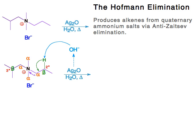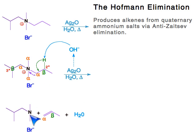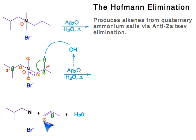The electrons form a lone pair on the nitrogen. The bromine is doing nothing but hanging out. These electrons are now forming a double bond between the alpha and beta carbons — this is your main product. You're trying to make an alkene, and you also get the amine on the left as well.